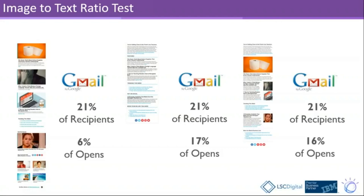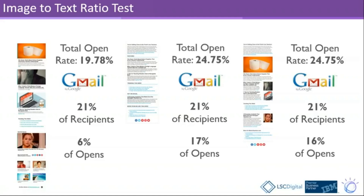When I had about a 60/40 split or so, it stayed at about 16%. So not really changing the articles and what was being shared, but just changing that image-to-text ratio. And just by doing that, the overall open rate across all the lists jumped dramatically.